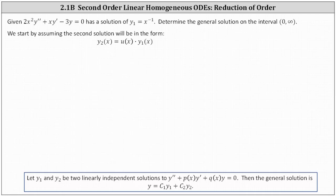We want to find the general solution on the interval from zero to infinity of the given second order linear homogeneous differential equation that has a solution of y1 equals x to the power of negative one. We'll be using the method of reduction of order to determine the general solution.